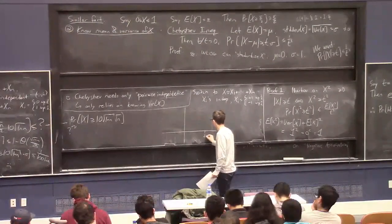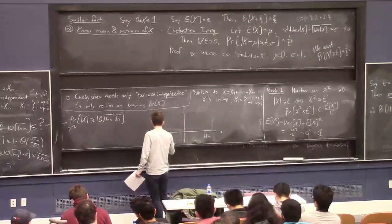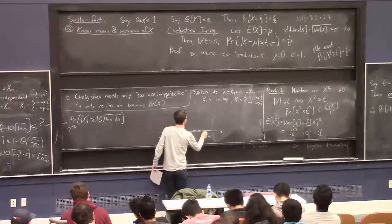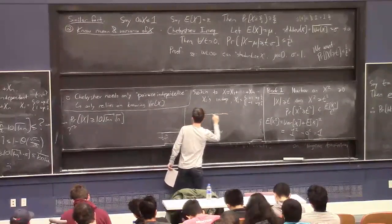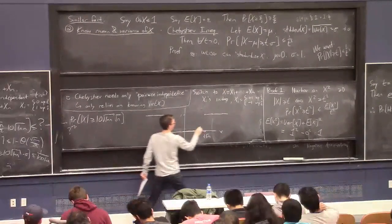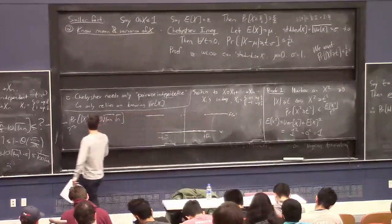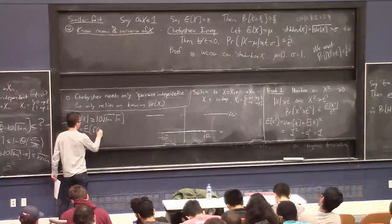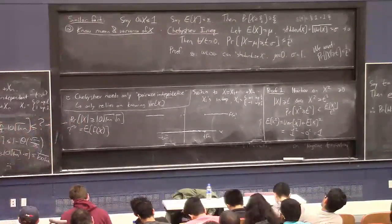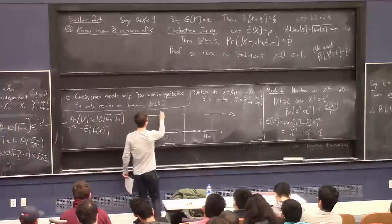Let's put t root n here in general, and minus t root n here. Let's look at the function f which is 0 in the middle and jumps up to 1 on the outside. So this probability is literally equal to the expected value of f of x — f is indicating the event that we care about.